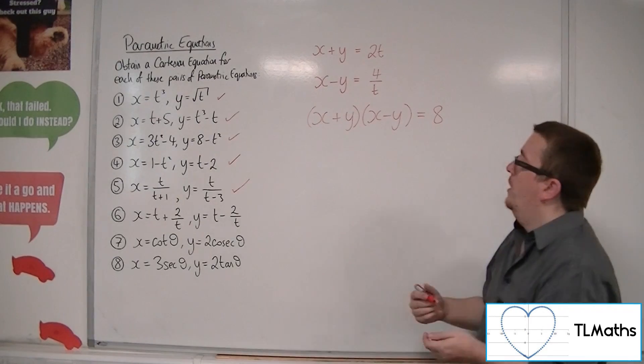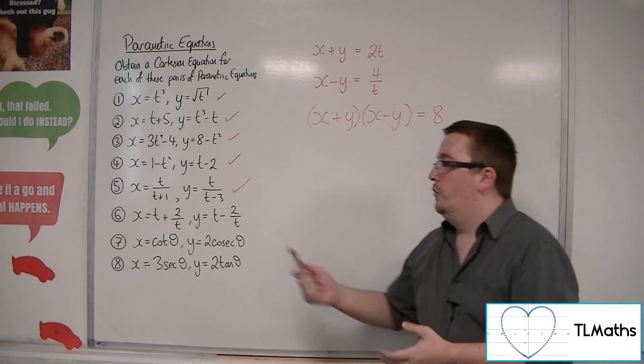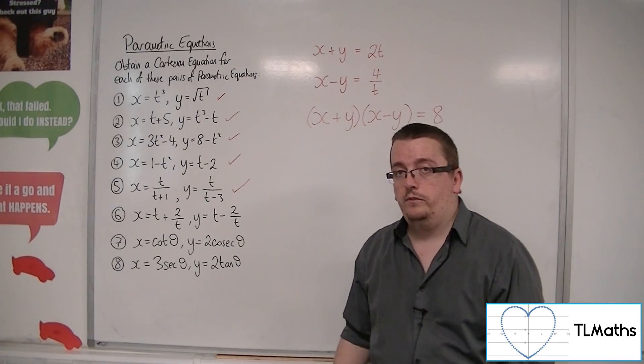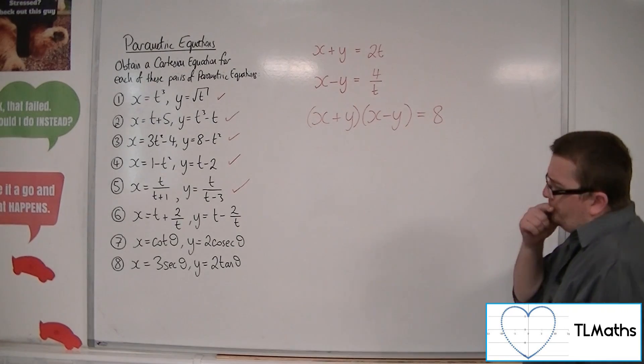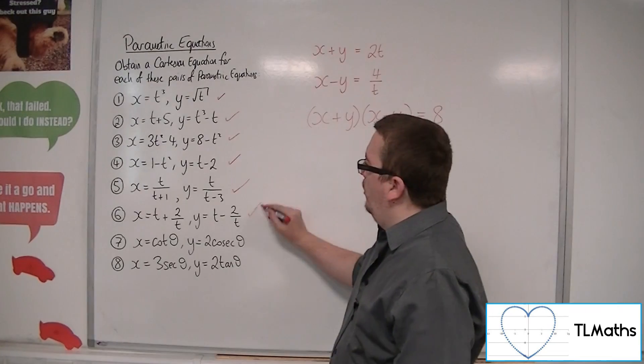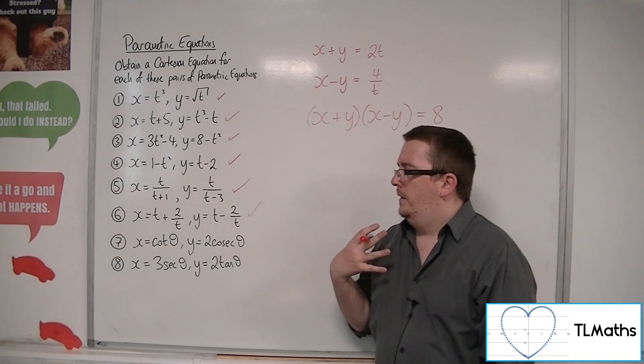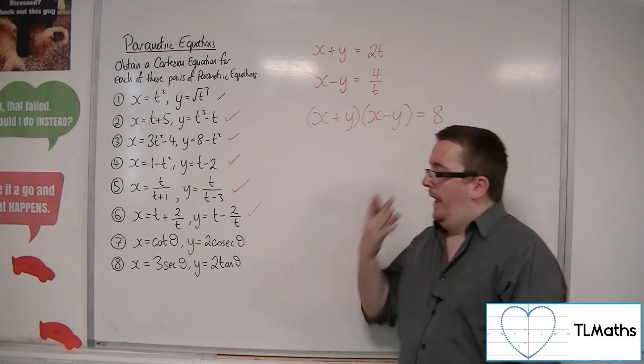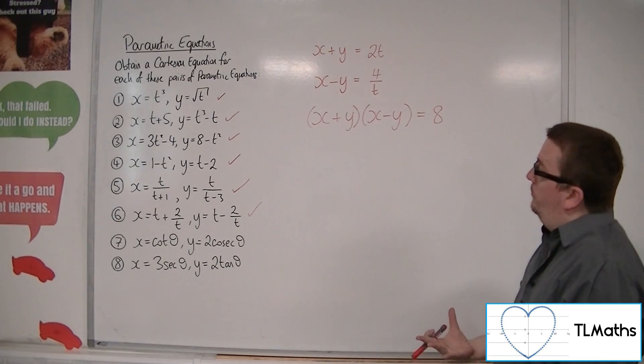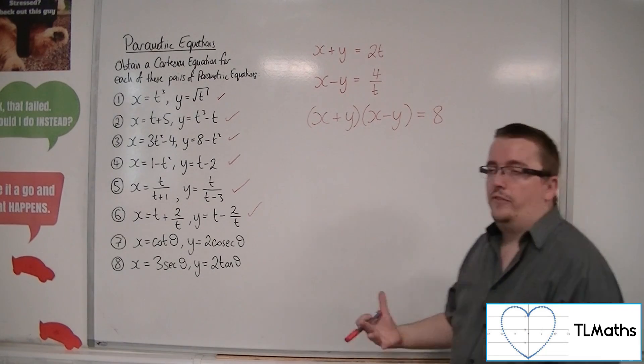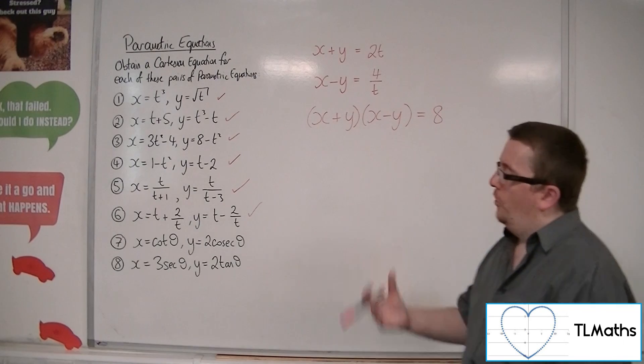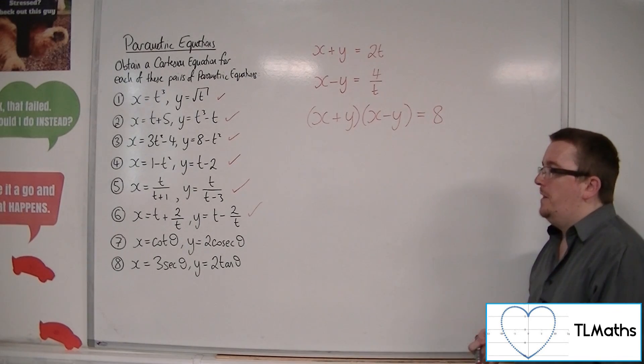And I now have a Cartesian equation that represents number 6. Now, you might be looking at that going, well, how on earth would you initially spot that? And, you know, fair credit, but it is quite a tough one to spot, okay?